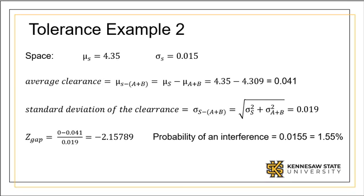If the clearance is less than zero, we have an interference. We find an average clearance of 0.041.